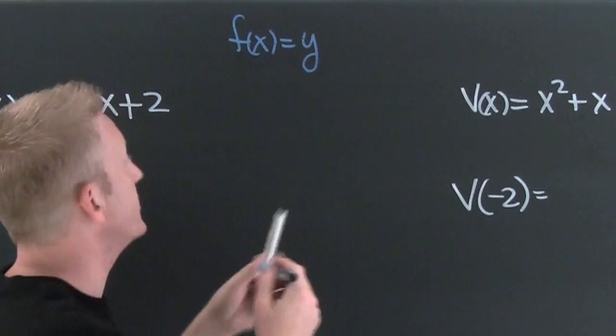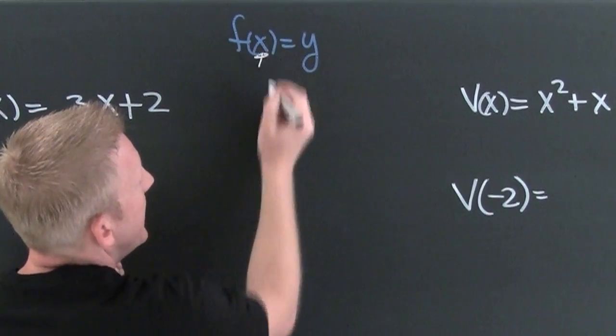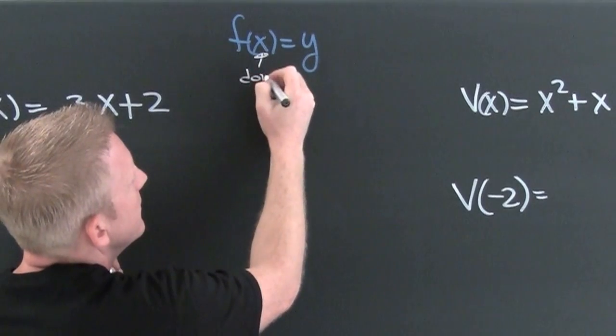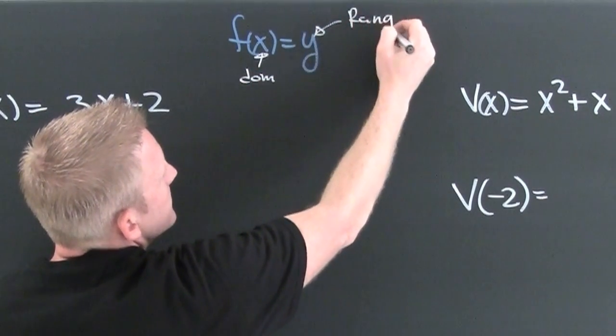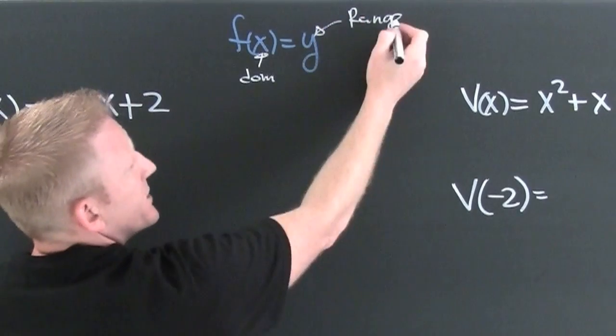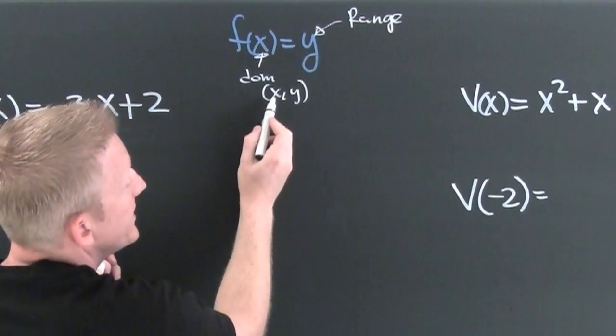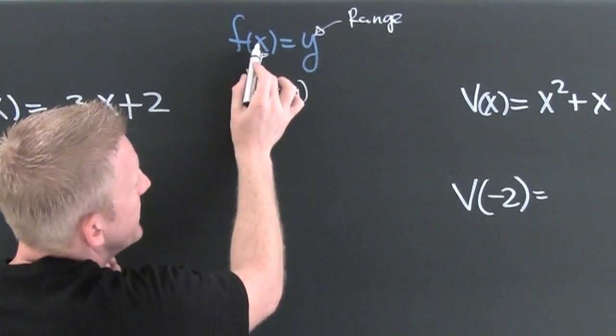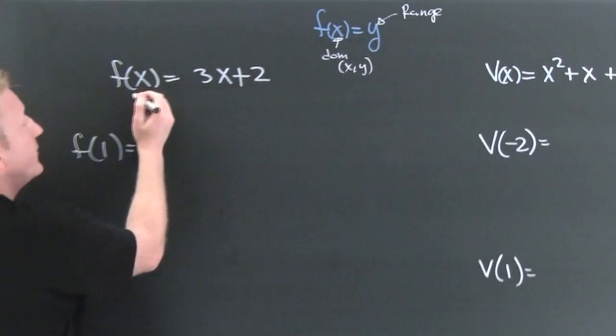Your domain is the stuff you put inside, your range is the stuff you get out, and you do get a collection of ordered pairs of the form (x,y), where this is the domain and that's the range. That's what you put in, this is what you get out.